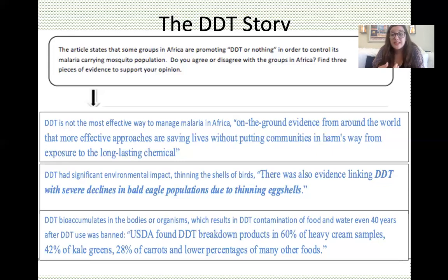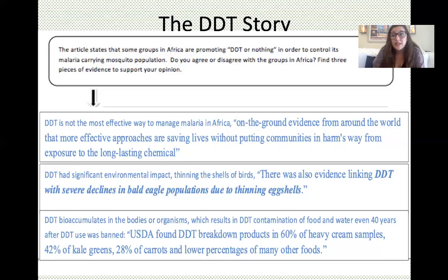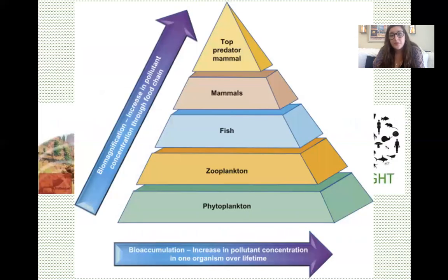DDT bio-accumulates — it builds up inside the bodies of organisms — which results in DDT contamination of food and water. Even 40 years after DDT use was banned in the US, the USDA found DDT breakdown products in 60% of heavy cream samples, 42% of kale greens, 28% of carrots, and lower percentages in many other foods. This stuff sticks around in the environment.